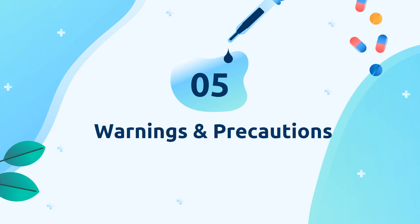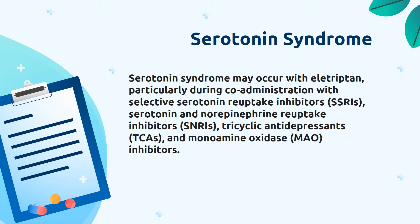What are the warnings and precautions for patients on allotriptin? First, serotonin syndrome. Serotonin syndrome symptoms may include mental status changes such as agitation, hallucinations, and coma. Then, autonomic instability such as fast heartbeat, blood pressure changes, and hyperthermia. The patient may also experience neuromuscular abnormalities such as incoordination, or gastrointestinal symptoms such as nausea, vomiting, and diarrhea. The onset of symptoms usually occurs within minutes to hours of receiving these medications.